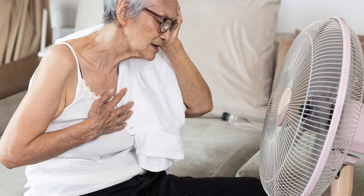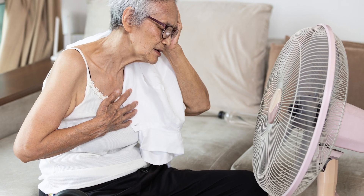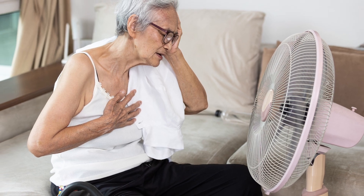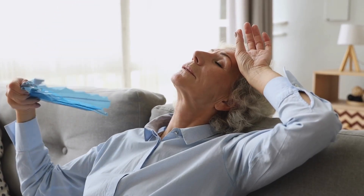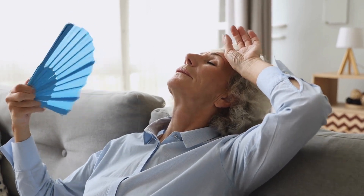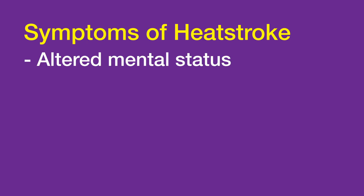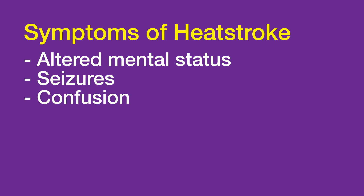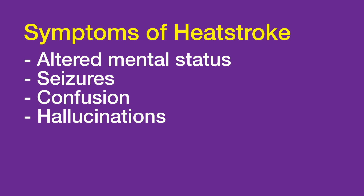There's also a version of heat stroke that happens in the elderly. Folks who are exposed to mild heat and can't take care of themselves for various reasons can quickly develop heat stroke. The main thing that differentiates heat stroke from all other heat illnesses is altered mental status — seizures, confusion.